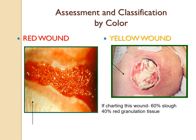Let's look at assessment by color — this is actually the easiest way to assess a wound. We look at red, yellow, and black. A red wound is a healthy wound: it means it's getting oxygen and nutrients and has a really good prognosis for healing. A yellow wound means it's half and half — sometimes a yellow wound might be covered by slough, which is desiccated dead tissue. The wound in this picture has about 60% slough — yellow, gray, brown — and 40% granulation tissue.